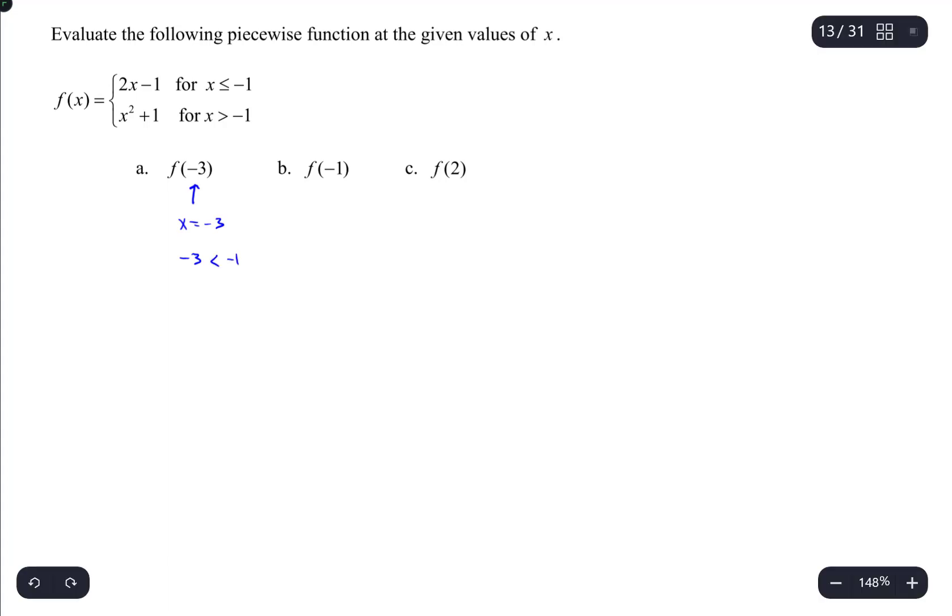Well, it is less than negative 1. Okay, since negative 3 is less than negative 1, that tells me I need to use this function right here. So f of negative 3 is going to be 2 times negative 3 minus 1, which is negative 6 minus 1, or negative 7.